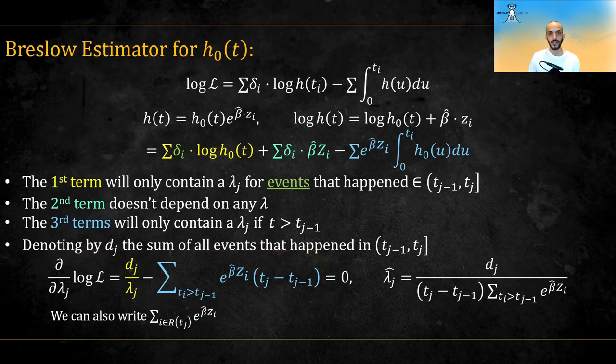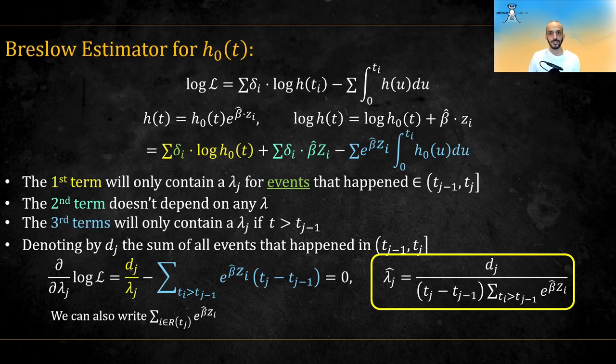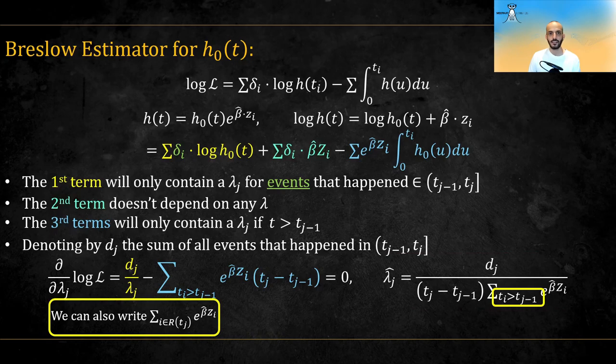Equating to 0, we get that the maximum is attained at lambda equals this. And we can also write the index of the sum as i in the risk set at time t j, instead of t i greater than t j.